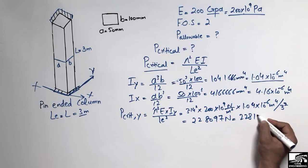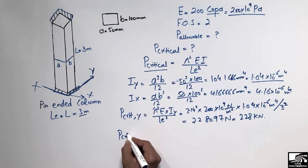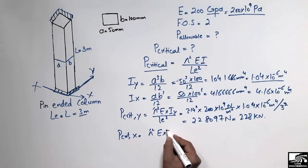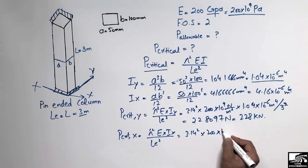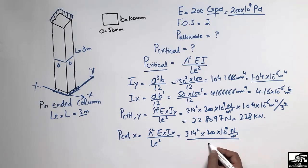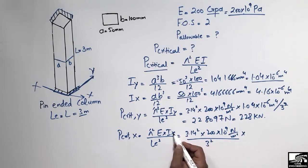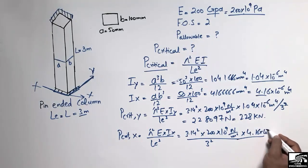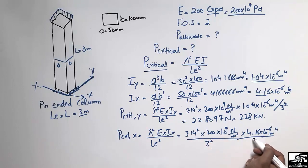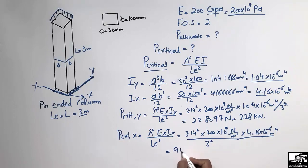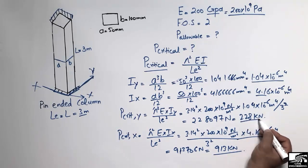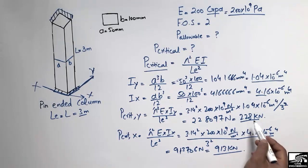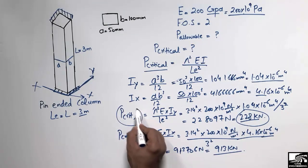Similarly, P_critical along X uses I_X = 4.16 × 10⁻⁶ m⁴ divided by 3² = 9 m². This gives 913,706 N, or approximately 913 kN. Since 228 kN is smaller than 913 kN, we take the minimum value of 228 kN to be on the safe side.